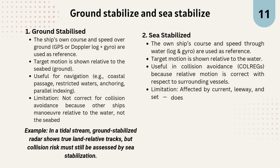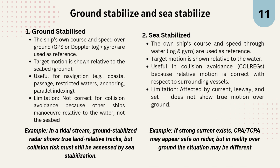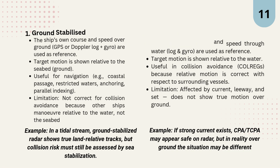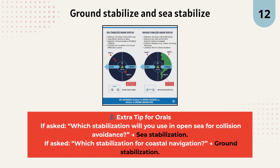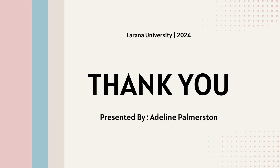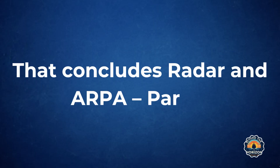Sea stabilized mode uses log and gyro to show target motion relative to the water. It's best for collision avoidance, since vessels move relative to the water. Its limitation is that it's affected by currents and set, so overground motion may differ. For example, if a strong current exists, CPA/TCPA may appear safe on radar, but in reality the overground situation may be different. For orals: if asked which stabilization for open sea collision avoidance, the answer is sea stabilization. For coastal navigation, use ground stabilization.